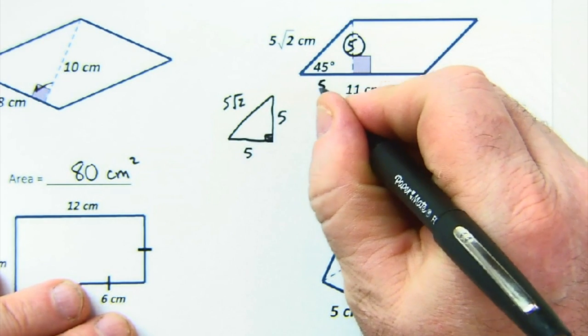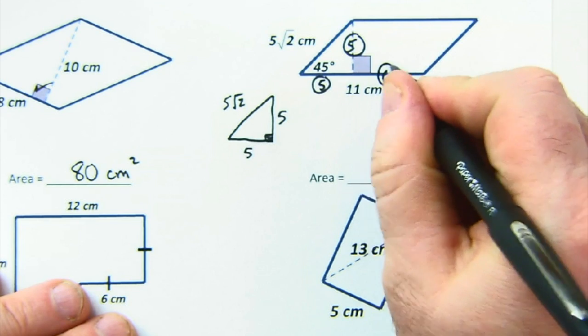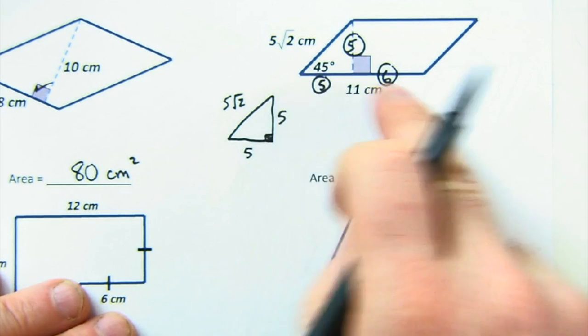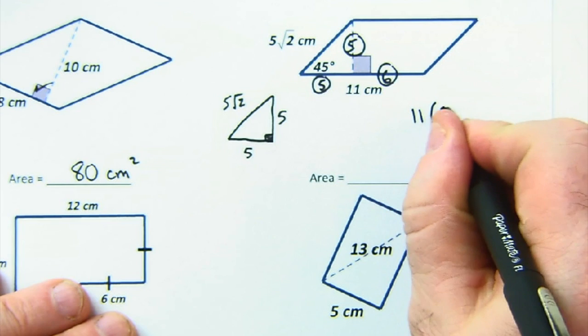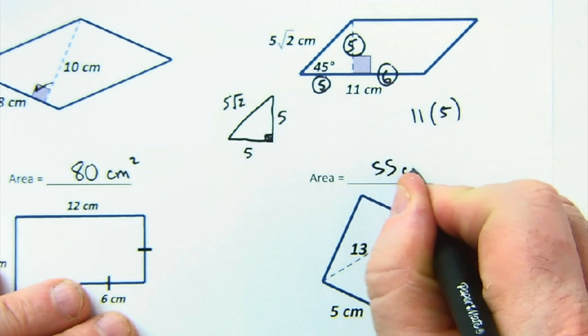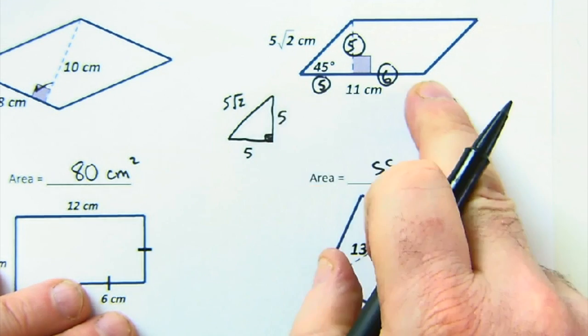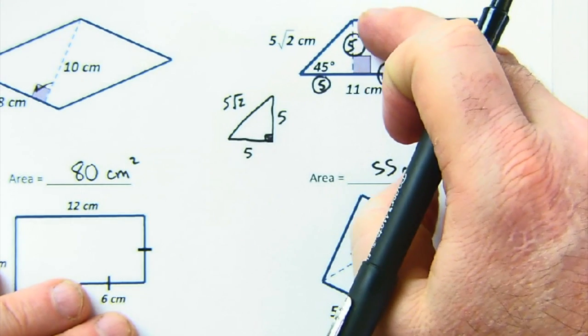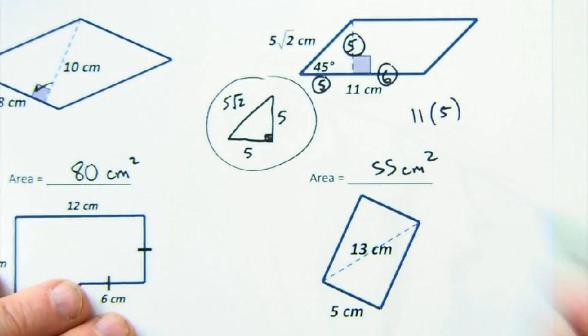So that gives us our height here. That does tell us that this is 5. This other piece would be 6 then. But in our case, it's still just 11 times 5 is 55 centimeters squared. Base is 11. Height is 5. But I use this nice little 45-45 relationship.